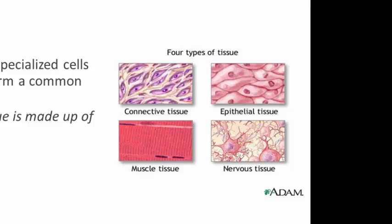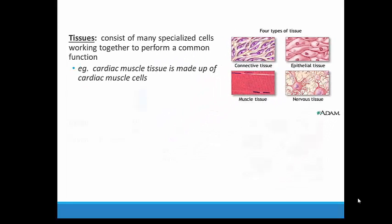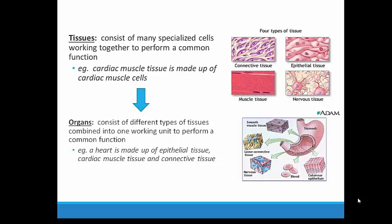The muscle tissue is then able to coordinate contractions to allow for movement, and nervous tissue coordinates the transmission of information throughout the body. The next level of organization is an organ. Usually, several different types of tissues need to come together to form an organ. For example, a heart is made up of a specialized muscle tissue called cardiac muscle, so it can contract during a heartbeat. But this organ is also made up of epithelial tissue, which covers and protects, and connective tissue, which binds and supports the heart. Basically, the tissues must perform as a team in order for an organ to function properly.